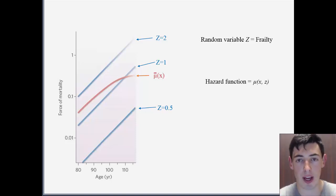The function mu x with respect to z is the hazard function when frailty is accounted for. The different values of z represent the different mortality schedules of different subpopulations.